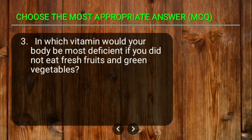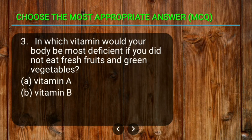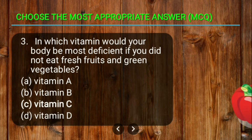Question number three: in which vitamin would your body be most deficient if you did not eat fresh fruits and green vegetables? The options are Vitamin A, Vitamin B, Vitamin C, and Vitamin D.